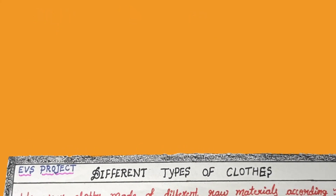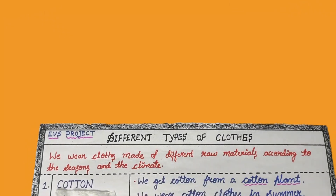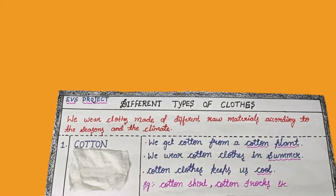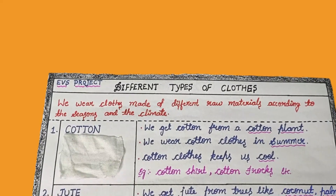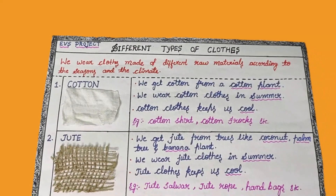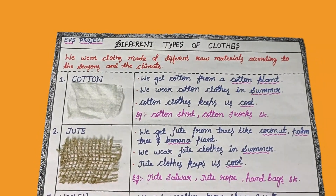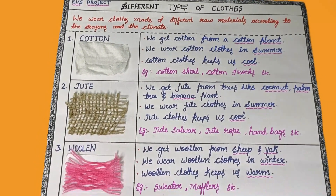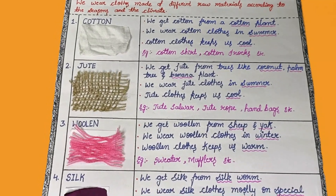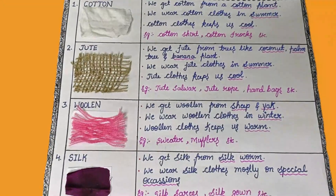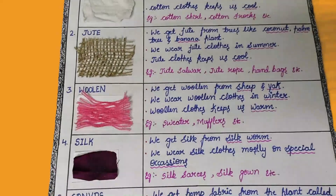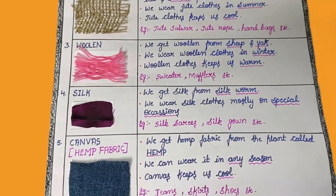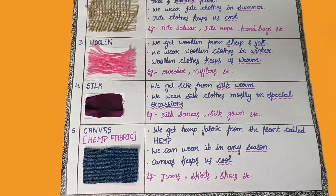EBS project for grade 2. Different types of clothes: Cotton, Jute, Woolen, Silk, Canvas or hemp fabric.